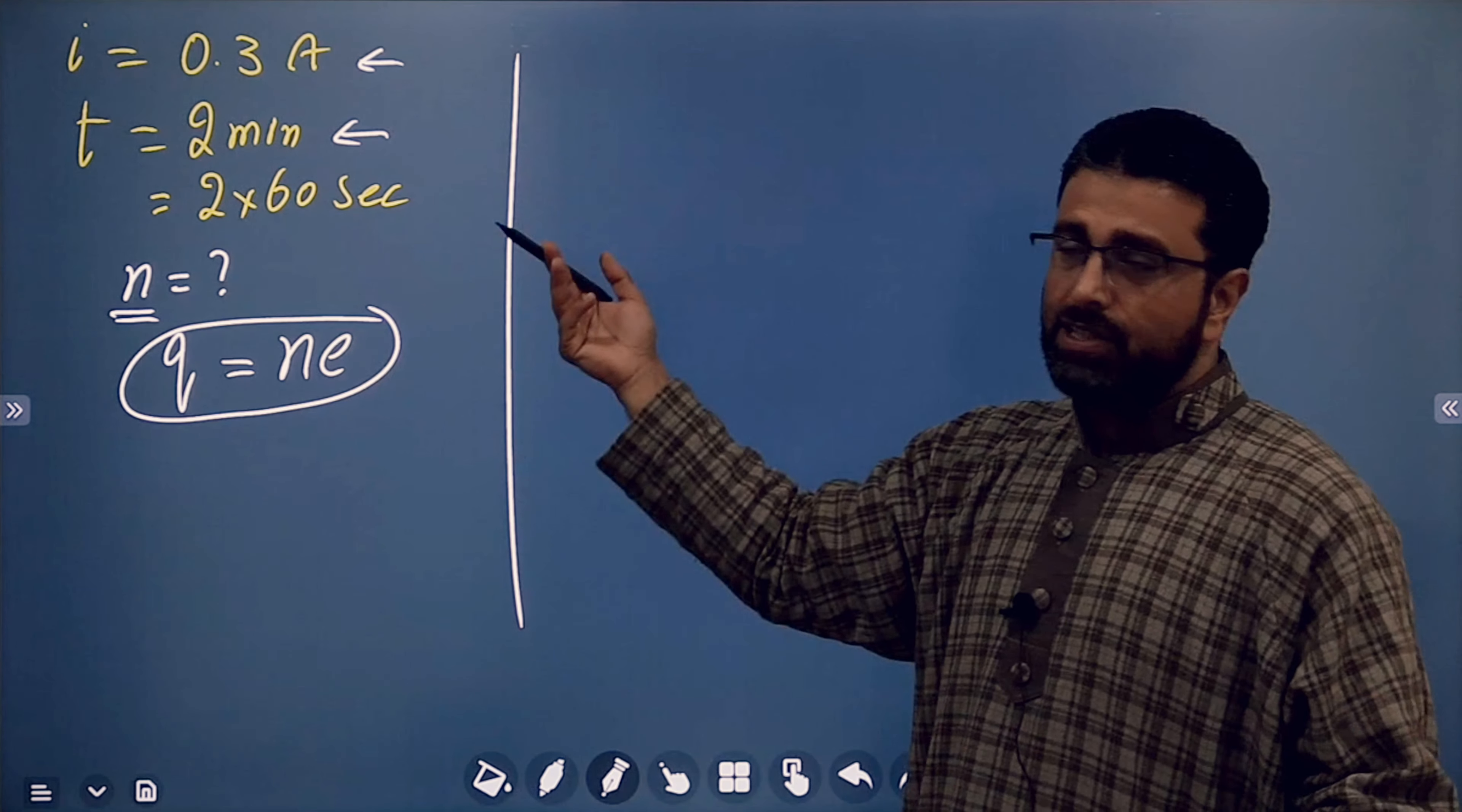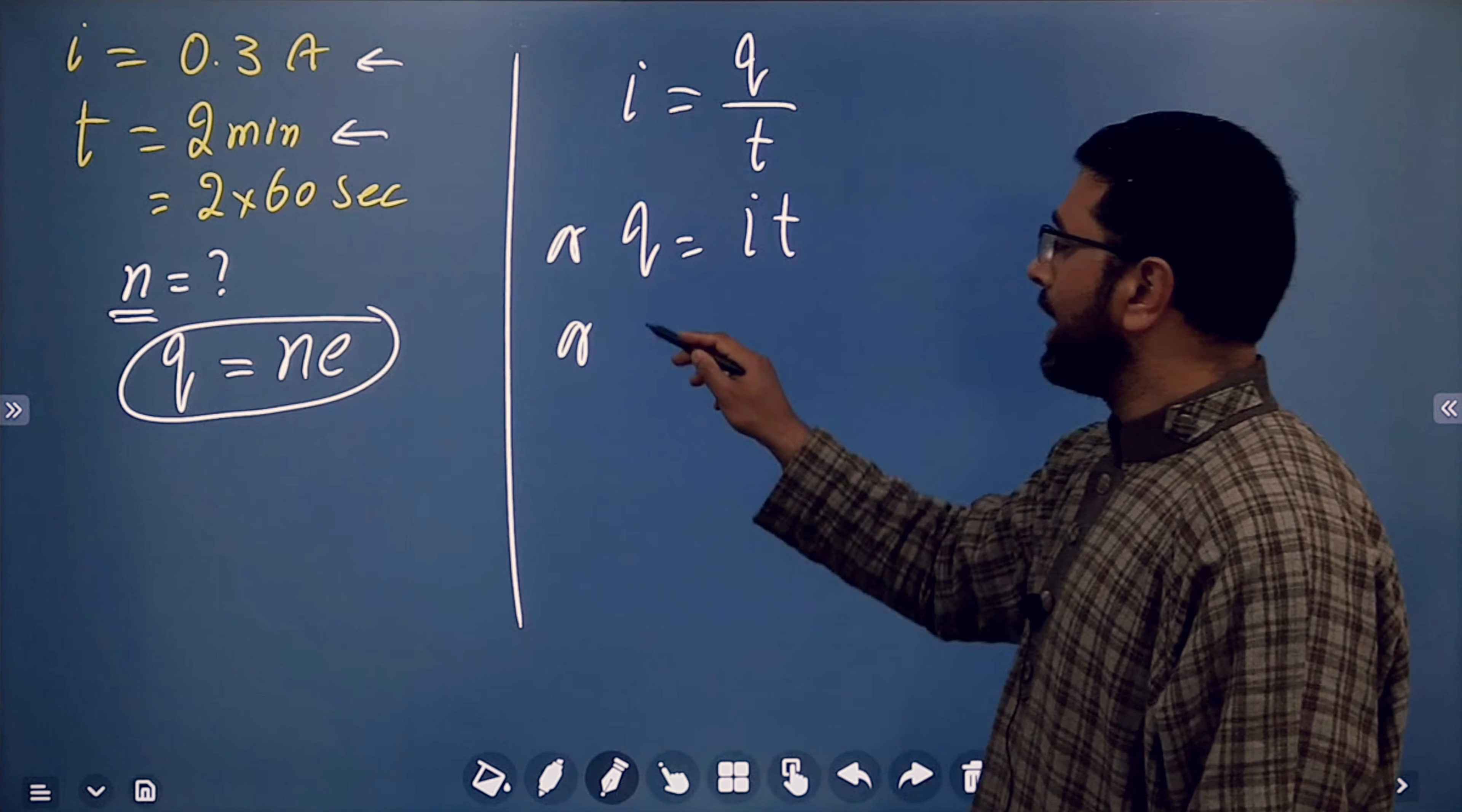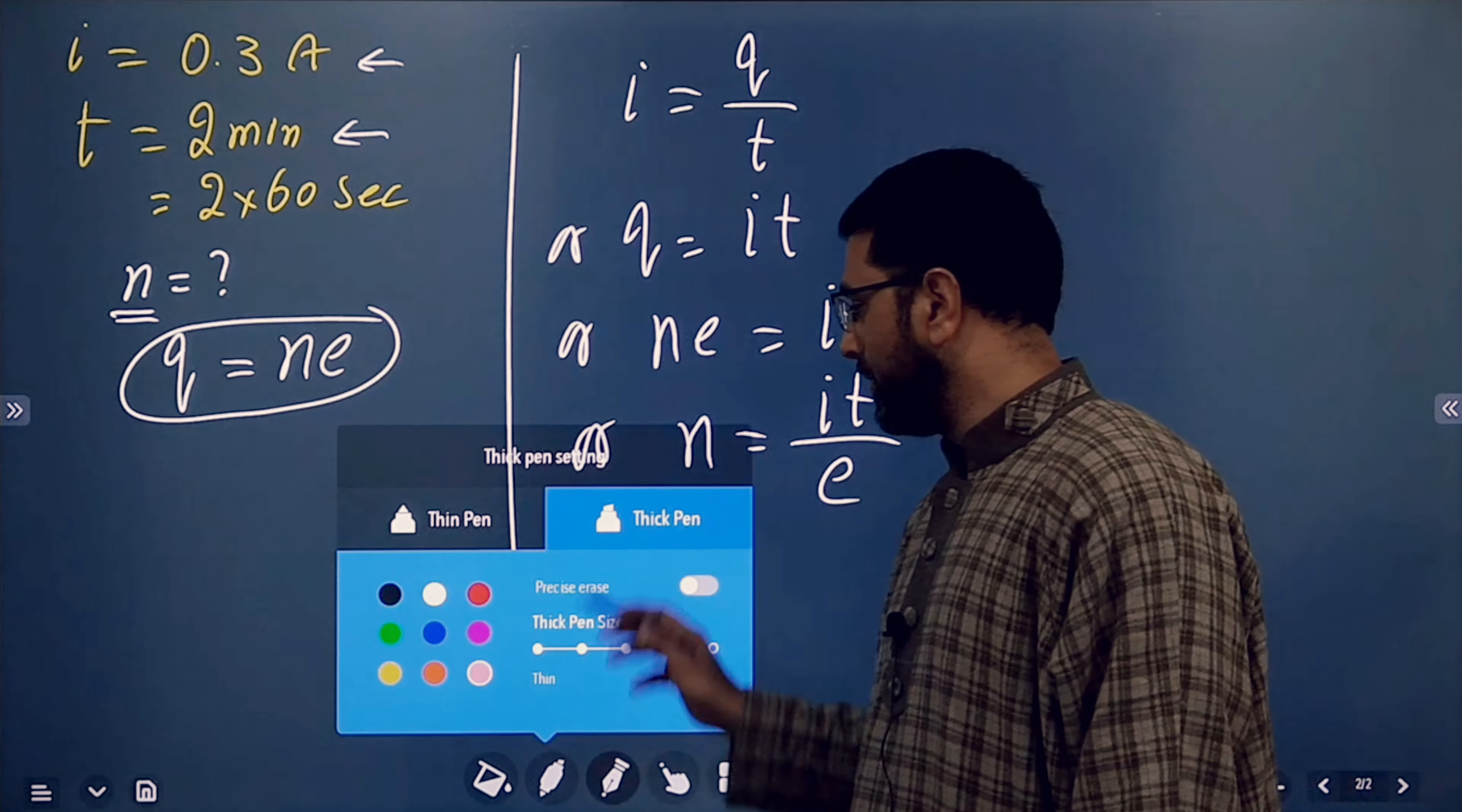And now from my basic definition of current, we know current flowing is charge flowing per unit time, divided by time taken. Or Q is equal to it. Or instead of Q, we can write ne. ne is equal to it. Or n is equal to it divided by e.